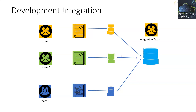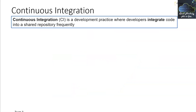In the waterfall model methodology this is acceptable, but in Agile it doesn't work. In Agile, it is recommended that each sprint — from one week to four weeks — be finished, integrated, and released to production. Within a two-week sprint, all teams need to integrate code, and if issues arise, two to three days resolving them is unacceptable. To avoid these situations, we have something called Continuous Integration. Continuous Integration is a development practice where developers integrate code into a shared repository frequently.